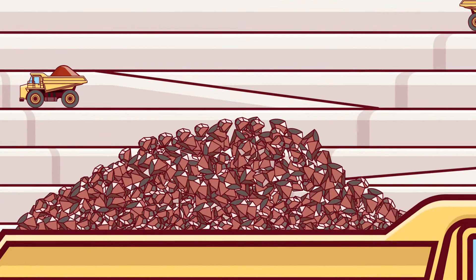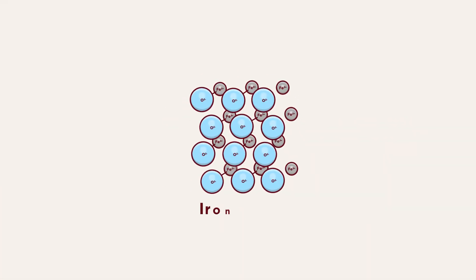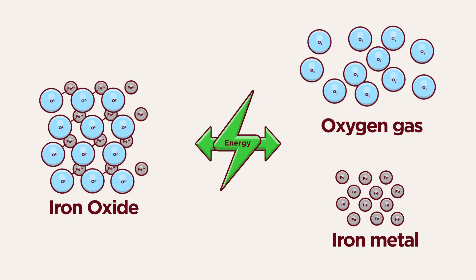Iron metal production is an energy intensive operation because it needs to separate iron and oxygen atoms tightly bounded in naturally occurring minerals.